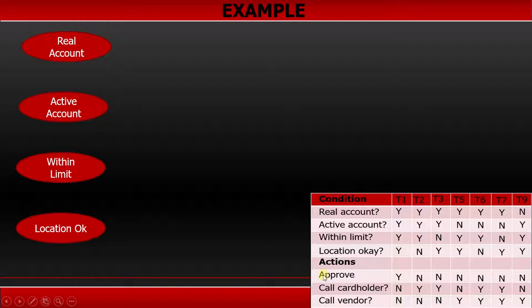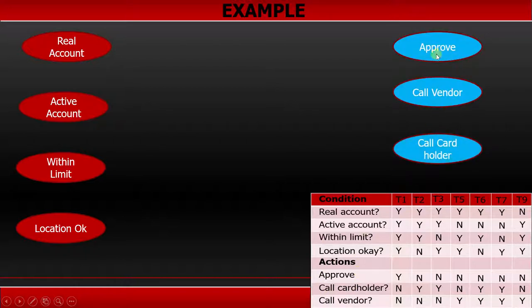Now there are three actions. So similar way, we have to list down the actions. Approve, call vendor, and call the card holder.